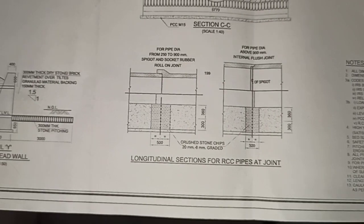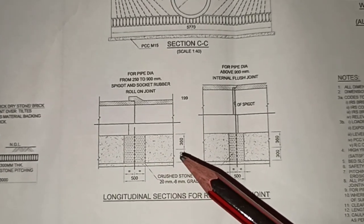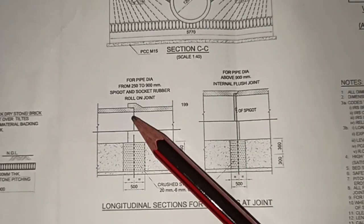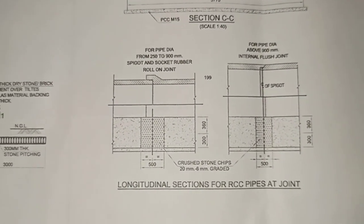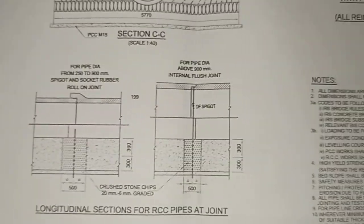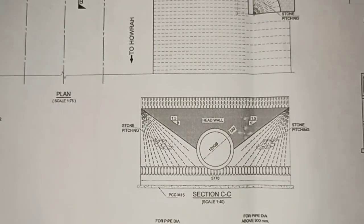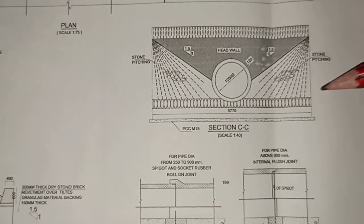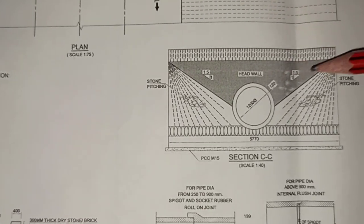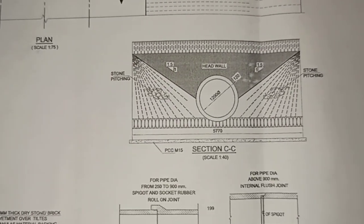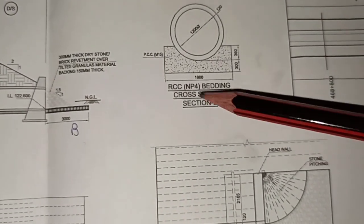Next we have the longitudinal section for RCC pipes, where joint details are shown. For pipes between 250 mm and 900 mm diameter, a spigot and socket joint is used. For pipes greater than 900 mm diameter, an internal flush type joint is used. Both joint details are shown here. A cross-section of the pipe shows the diameter as 1200 mm and thickness as 120 mm, with the head wall above it and stone pitching below.